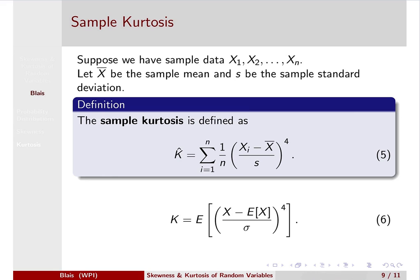Kurtosis picks up weight in the right tail in the same way as weight in the left tail, because it doesn't matter whether the deviation from the mean is positive or negative — it is being raised to an even power.